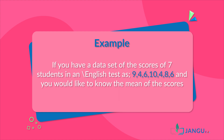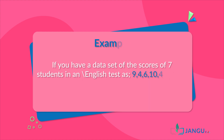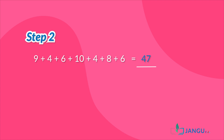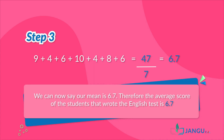and you would like to know the mean of the scores, all you would have to do is: one, add all the numbers together — nine plus four plus six plus ten plus four plus eight plus six — which equals 47. Then you divide the value you get by the number of individual numbers, which is in this case seven. Therefore, to get the mean you would calculate 47 divided by 7, which would give you the value of 6.7.